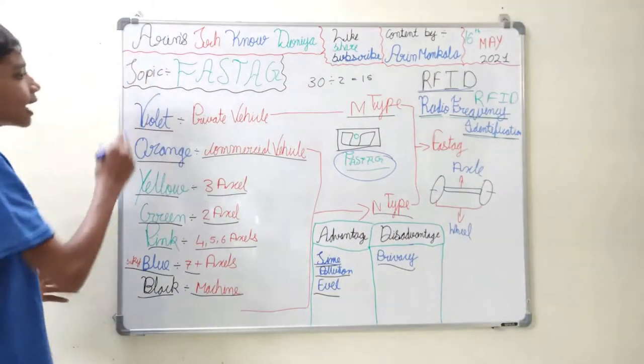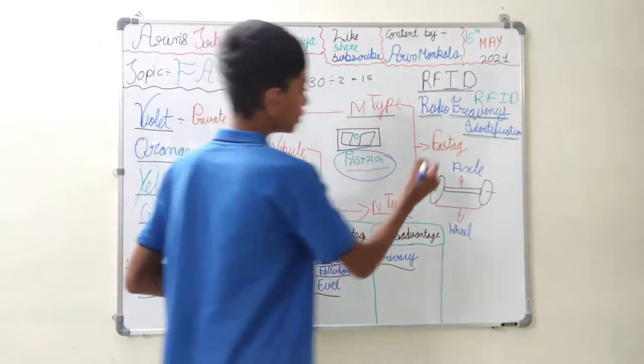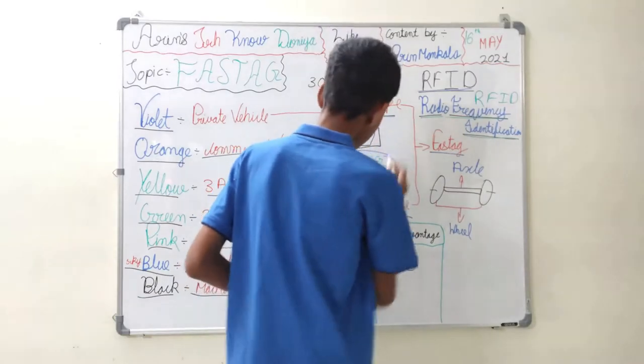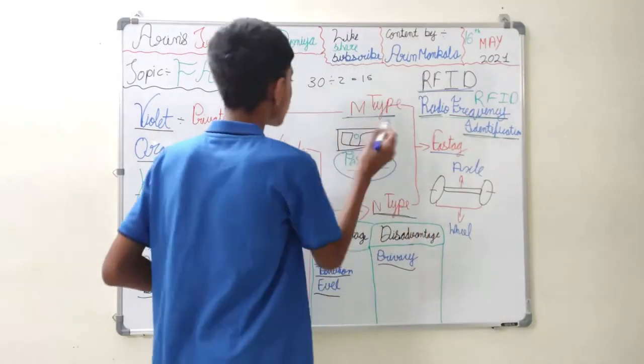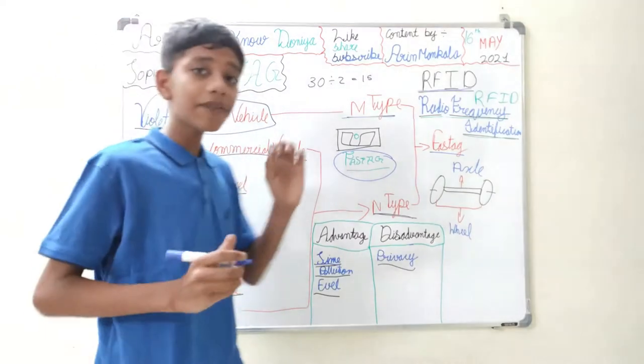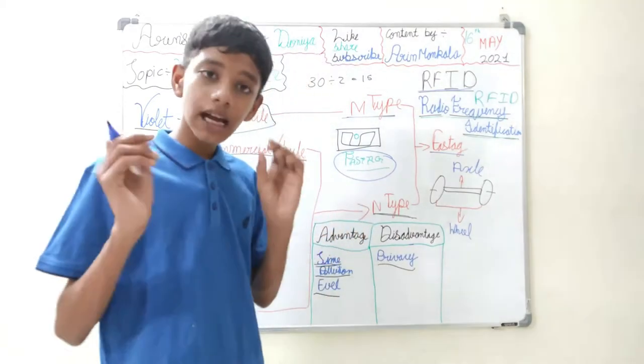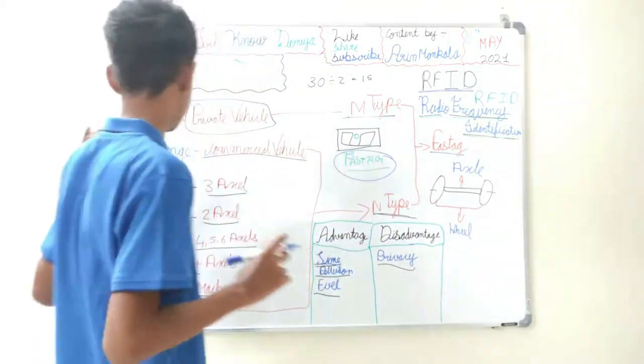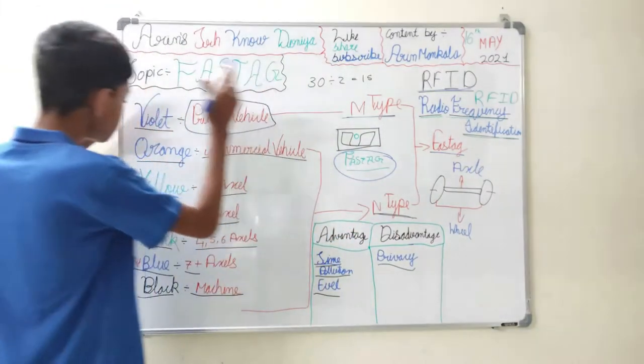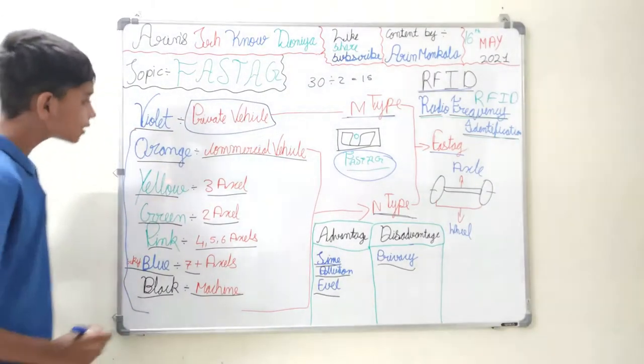Now FASTag, there are seven types of FASTag and it is divided into two more types. One is M type and one is N type. M type is for your private vehicles. Private vehicles are personal vehicles like cars, scooties and bikes, but scooties and bikes are not included in this. In the N type there are total of seven varieties.